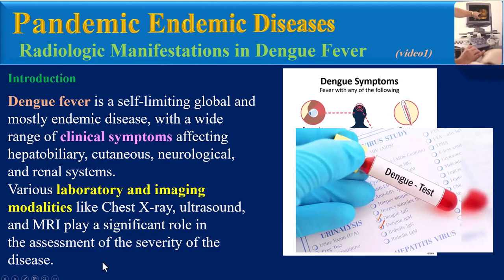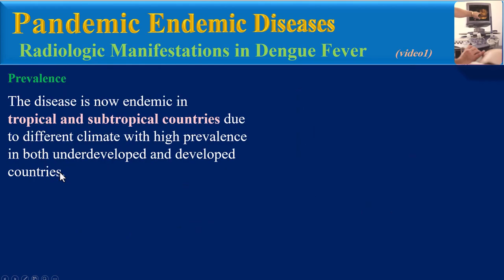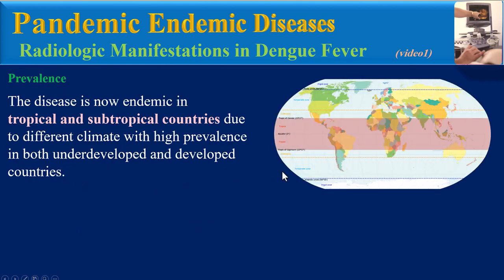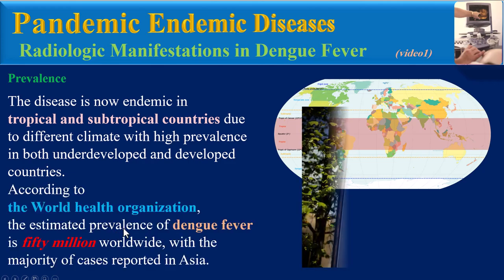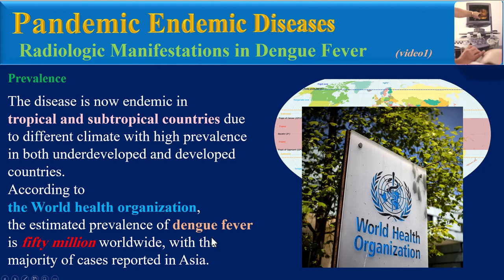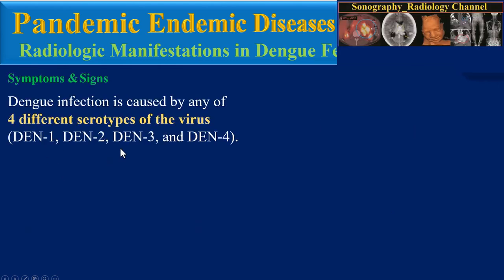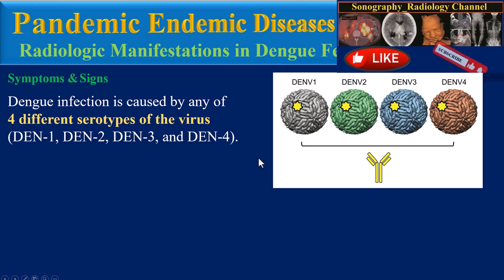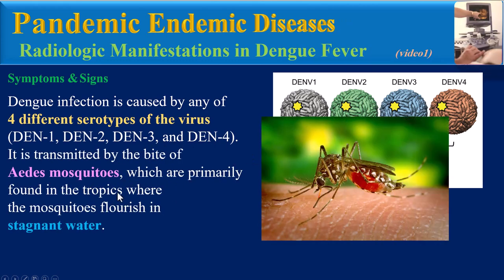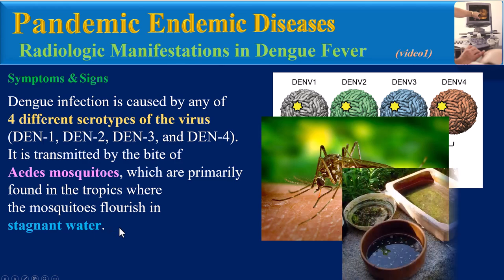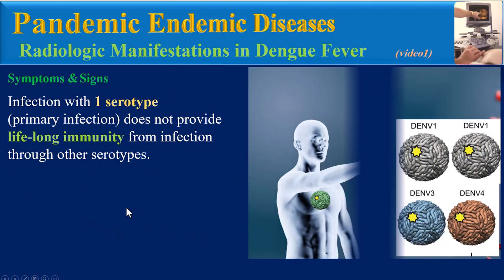The disease is now endemic in tropical and subtropical countries with high prevalence in both underdeveloped and developed countries. According to the World Health Organization, the estimated prevalence of dengue fever is 50 million worldwide, with the majority of cases reported in Asia. Dengue infection is caused by any of four different serotypes of the virus, transmitted by the bite of Aedes mosquitoes, which are primarily found in the tropics where the mosquitoes flourish in stagnant water.